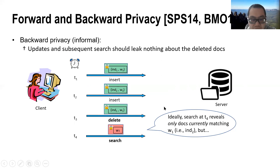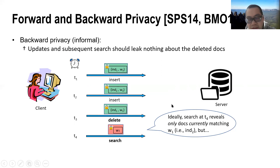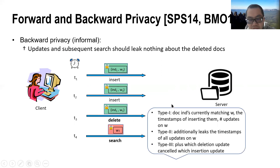According to the amount of information leaked during the update, backward privacy is further classified into three types, from Type 1 to Type 3. Type 1 backward privacy allows leaking the document identifiers currently matching the query.